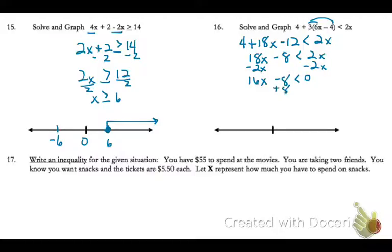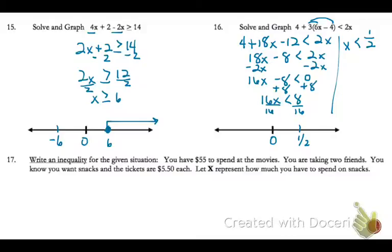I'm going to move my 8 over, so 16x is less than 8. And then I'm going to divide each side by 16. So x is less than 8 sixteenths or a half. So I'll put an open circle at a half, and I want to show everything that's less than.